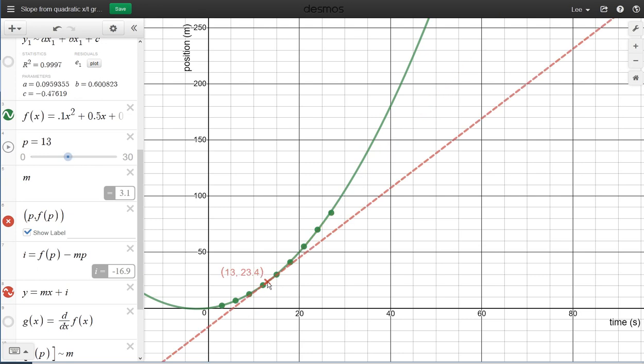Time 13, velocity, the slope is 3.1. That's all you need to do. Come up with a data table of about 10 different velocities from that line.